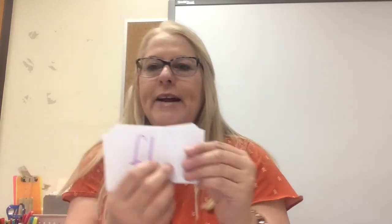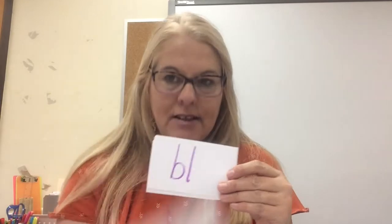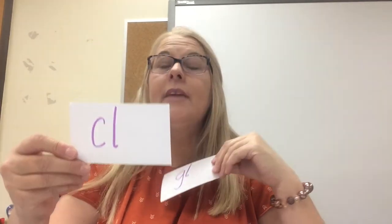Now we're back to the blends we have been doing — two letters that go together to make a sound. FL says 'fl,' GL says 'gl,' CL says 'cl,' BL says 'bl,' SL says 'sl,' PL says 'pl.' All right — which one starts the word class? Class. Now guys, if I take the word class and change 'cl' to 'gl,' what do I get? Glass. That is exactly right.